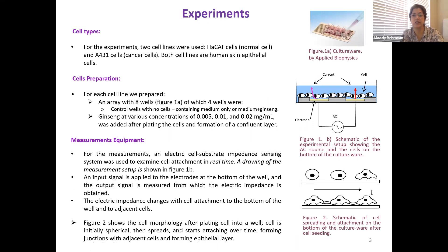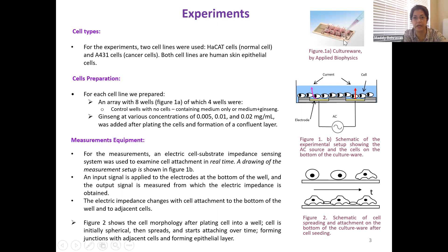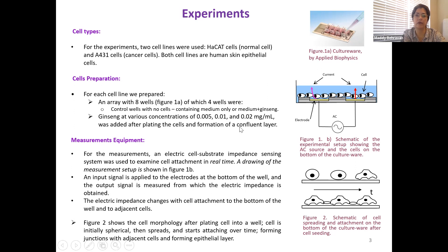For the experiments, two cell lines were used: HaCaT cells, which are normal cells, and A431 cells, which are cancer cells. Both cell lines are human skin epithelial cells. For each cell line, we prepared an array with eight wells, of which four wells were control wells containing medium only or medium and ginseng. Ginseng at various concentrations of 0.005, 0.01, and 0.02 milligrams per ml was added after plating the cells and formation of a confluent layer. Confluent layer formation was confirmed by microscope image.